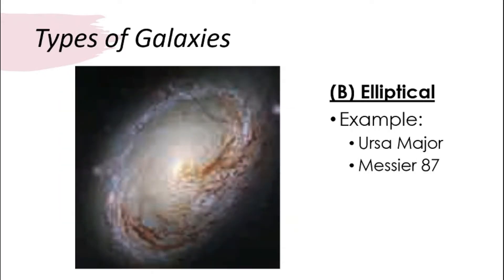This is an elliptical galaxy. It looks like a plate. Some examples that we have identified are Ursa Major and Messier 87.